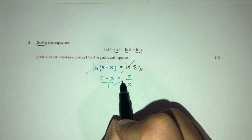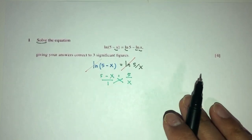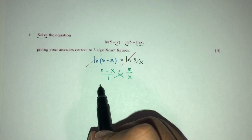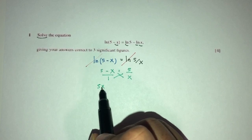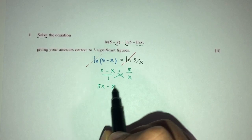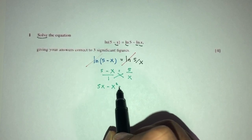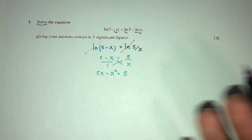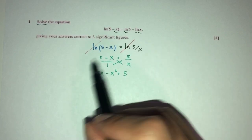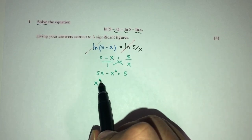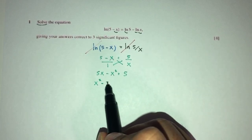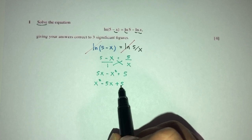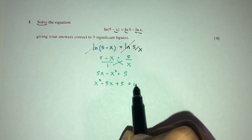Obviously the next step will be to cross-multiply. You will have 5x minus x squared. That will be 5. Let's rearrange — everything to one side — you will have x squared minus 5x plus 5 equals 0.